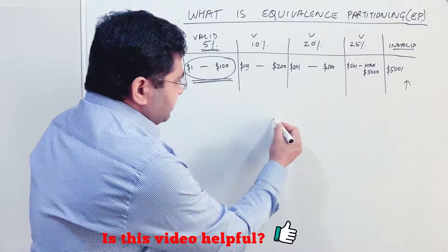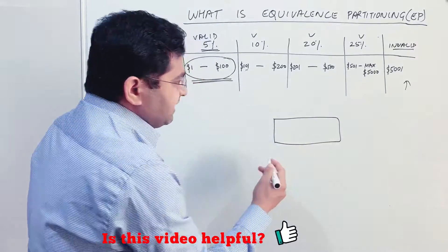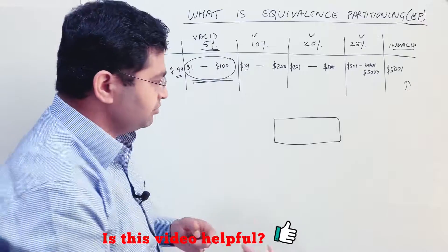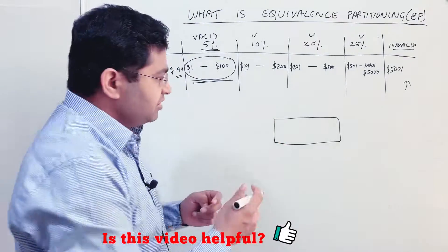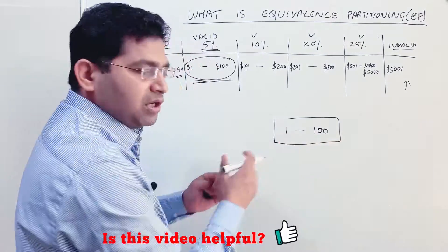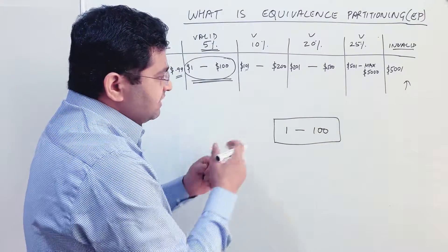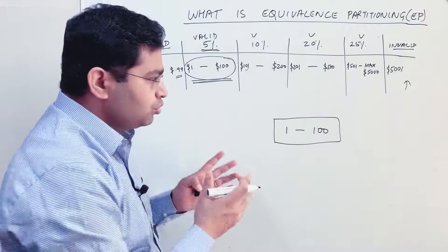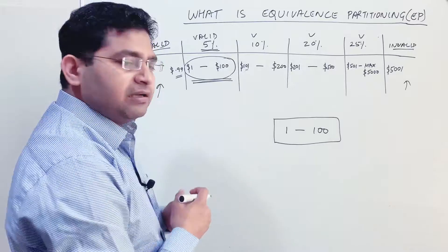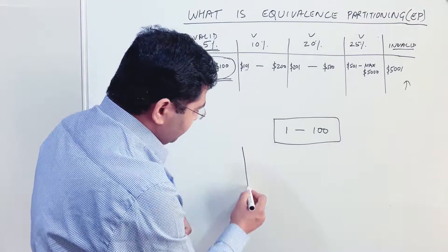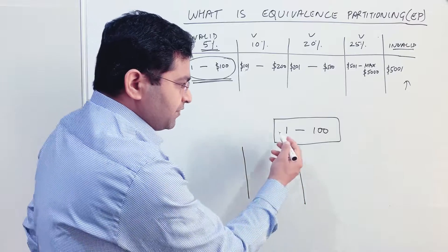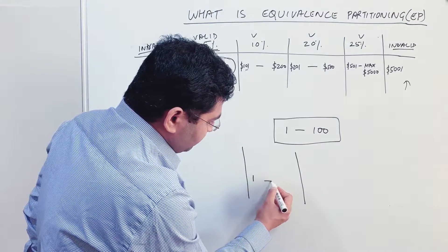Now let's take another example — a web page with an input box. An interviewer might ask: there is a web page with a text box that accepts values from 1 to 100, and only whole numbers are accepted. How do you get the equivalence partitions for this scenario? You can say: the text box accepts values from 1 to 100.